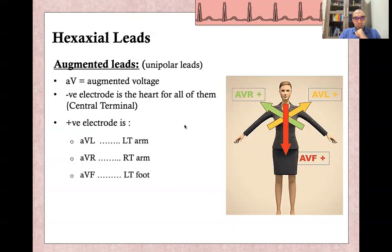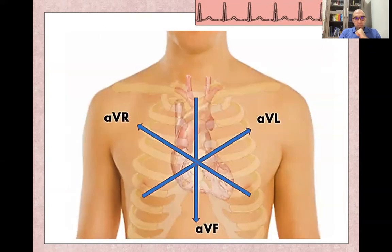The augmented leads are AVR, AVL, and AVF. 'AV' means augmented voltage lead. It augments the energy over the right arm, left arm, and left foot. AVL means left arm, AVR means right arm, and AVF means left foot. All of them consider the heart as a central terminal, which acts as the negative electrode for all of them. AVR is directed from the heart to the right arm, AVL from the heart to the left arm, and AVF from the heart to the left foot. Each lead has its own angle.